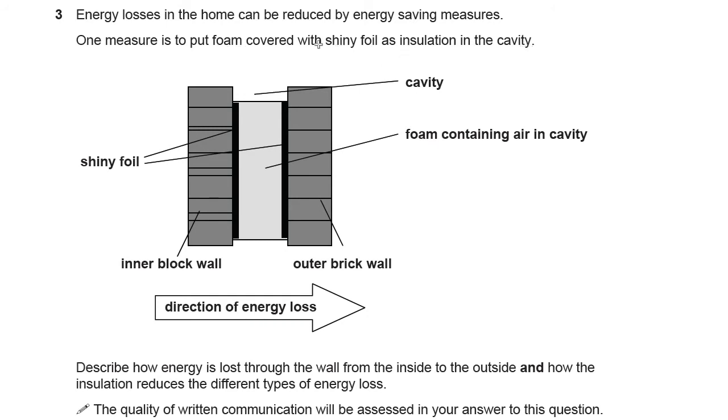They've given you a diagram here to show you a cross section through that wall. So this is the inner block wall, the structure of the house. This is the outer cladding of the house, the outer brick wall. And inside the middle we've got the foam insulation which contains air in a cavity so the air is trapped in there, and some shiny foil.